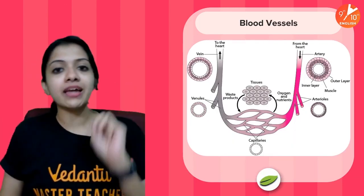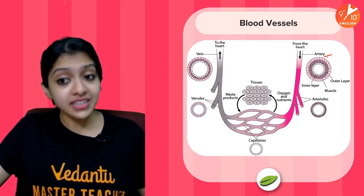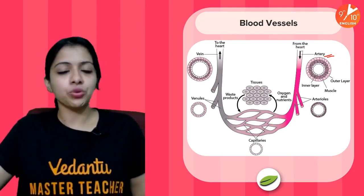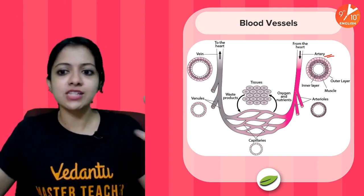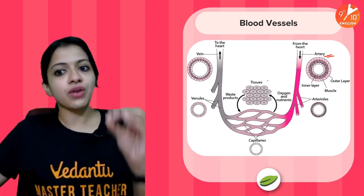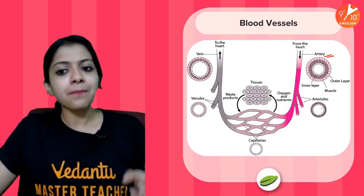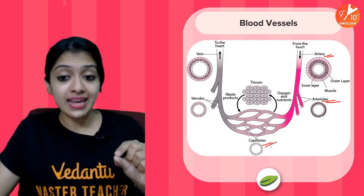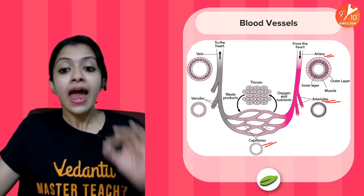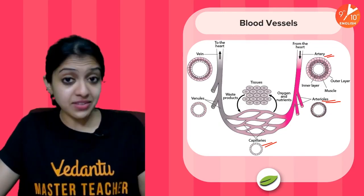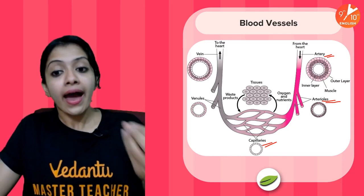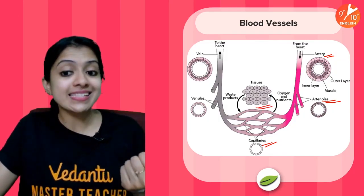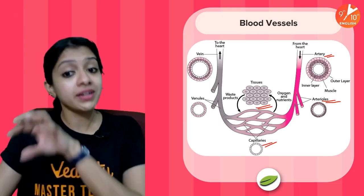Blood flows through the blood vessels. There are three major kinds of blood vessels in the human body. Arteries carry blood away from the heart — carrying oxygen and nutrients to distribute across all cells of the body. From the heart, arteries branch out into arterioles, which branch further into thin-walled capillaries — only one cell in thickness. Because they are thin-walled, capillaries carry out simple diffusion to exchange oxygen, carbon dioxide, and nutrients with the cells and tissues of the body.